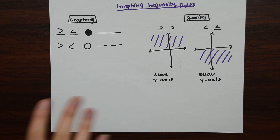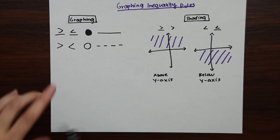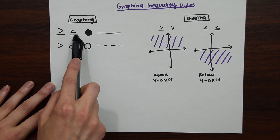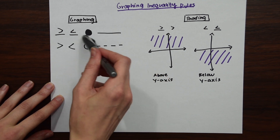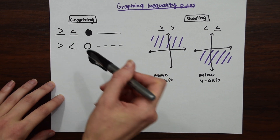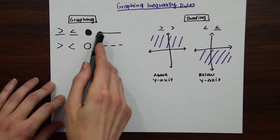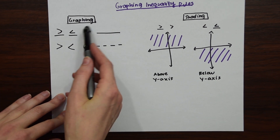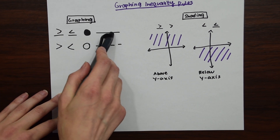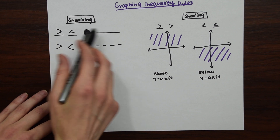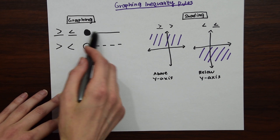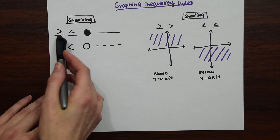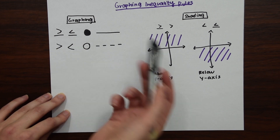Here's a summary of all the rules. When we're graphing greater than or equal to, or less than or equal to, we always use closed circles — we fill in those dots — and we use solid straight lines. That way we know whether the line is included in the solution or not. Easy way to remember: if the inequality sign is underlined, we're going to be using a solid line.